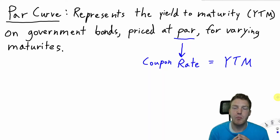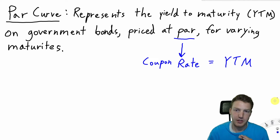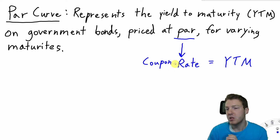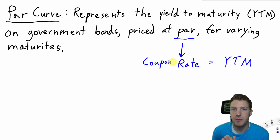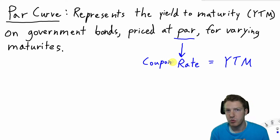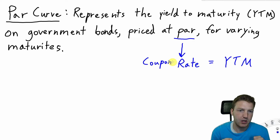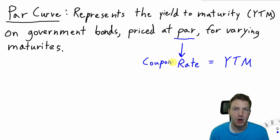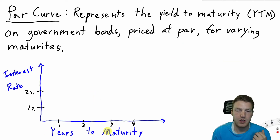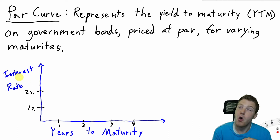The par curve represents the yield to maturity on government bonds priced at par for varying maturities. In order for a bond to be priced at par, the coupon rate on that bond must be equal to the yield to maturity that investors demand in the marketplace. When it's priced at par, the notional will be equal to its price. We can represent the par curve with a graph with years to maturity on the horizontal axis and the interest rate or coupon rate on the vertical axis.